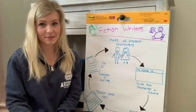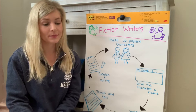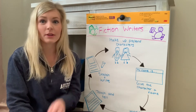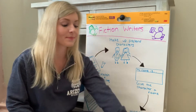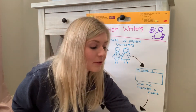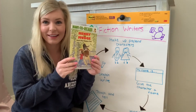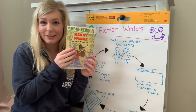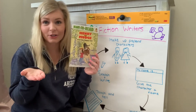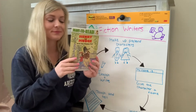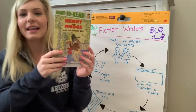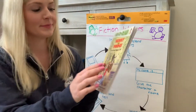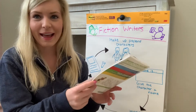Now I know that's a lot of steps to take in all at once. So to give you an example, while you start to think about your own characters, I'm going to read you a fiction book and you're going to see what they do in their fiction book and how it can apply to your own writing. This book is called Henry and Mudge and the Happy Cat.